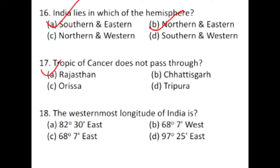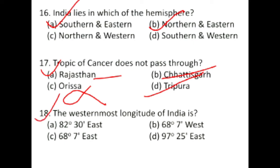Question number 17: Tropic of Cancer does not pass through which state? It passes through Rajasthan, Chhattisgarh, Tripura, Madhya Pradesh, and Jharkhand, but it does not pass through Odisha. So the answer is Odisha.